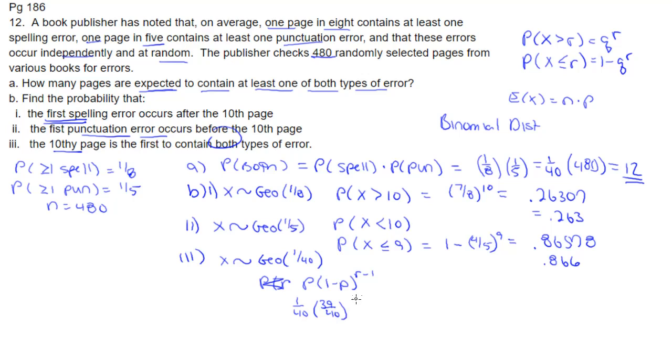1/40, 39/40. And then it's going to be 10 minus 1 or to the 9th power. And we're going to find out that probability is going to be 0.019905 or 0.0199 to three significant figures. All right, I hope that helps. Thanks for watching.